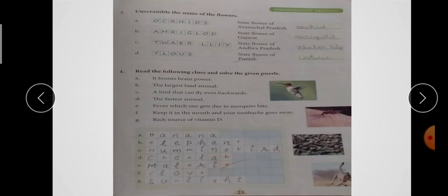Fifth है - Keep it in the mouth and your toothache goes away. की इसको हम अगर अपने मुंह में रखें, तो हमारे दांतों का जो दर्द है, वो चला जाता है. तो क्या है? Clove. C-L-O-V-E, Clove.